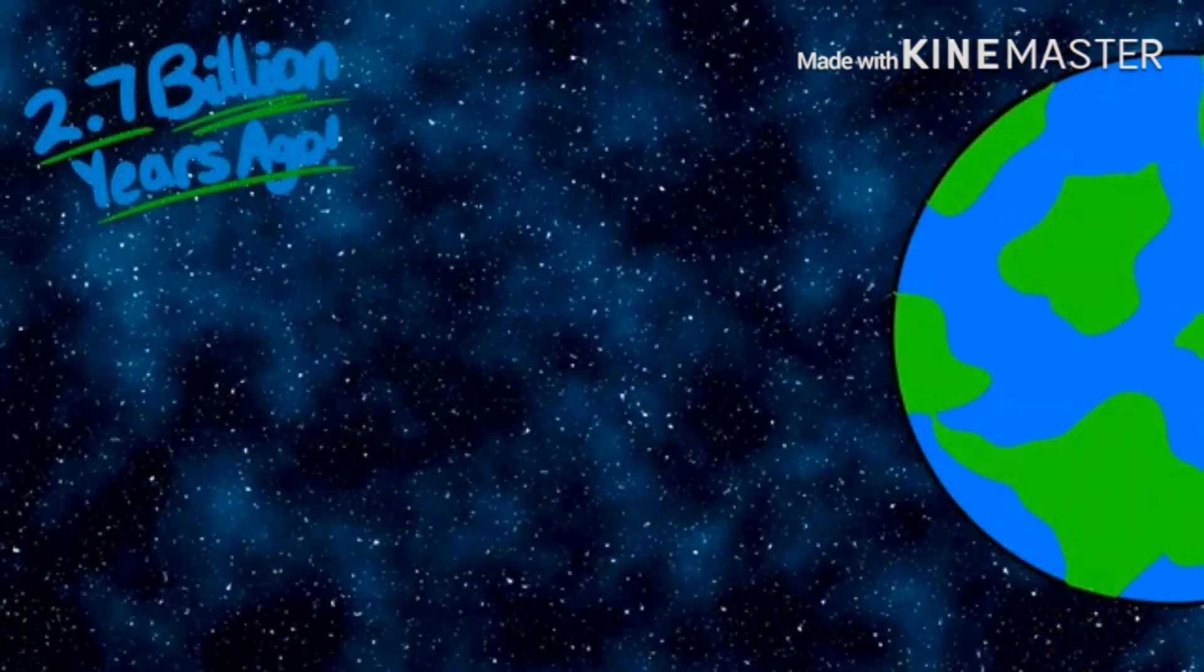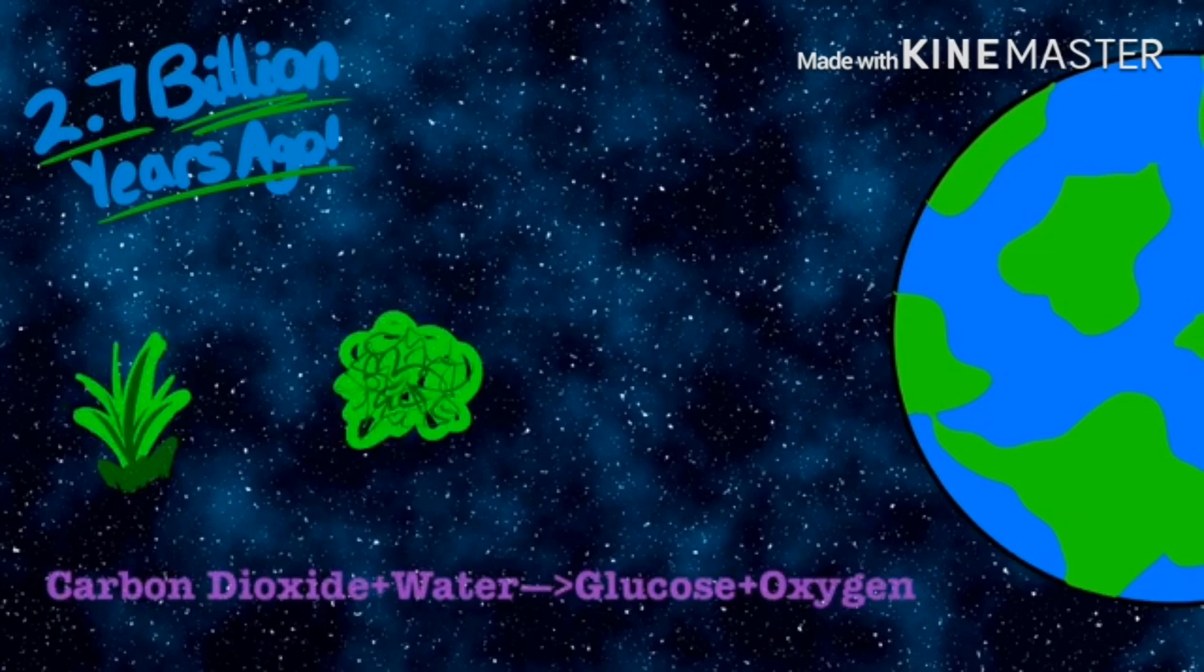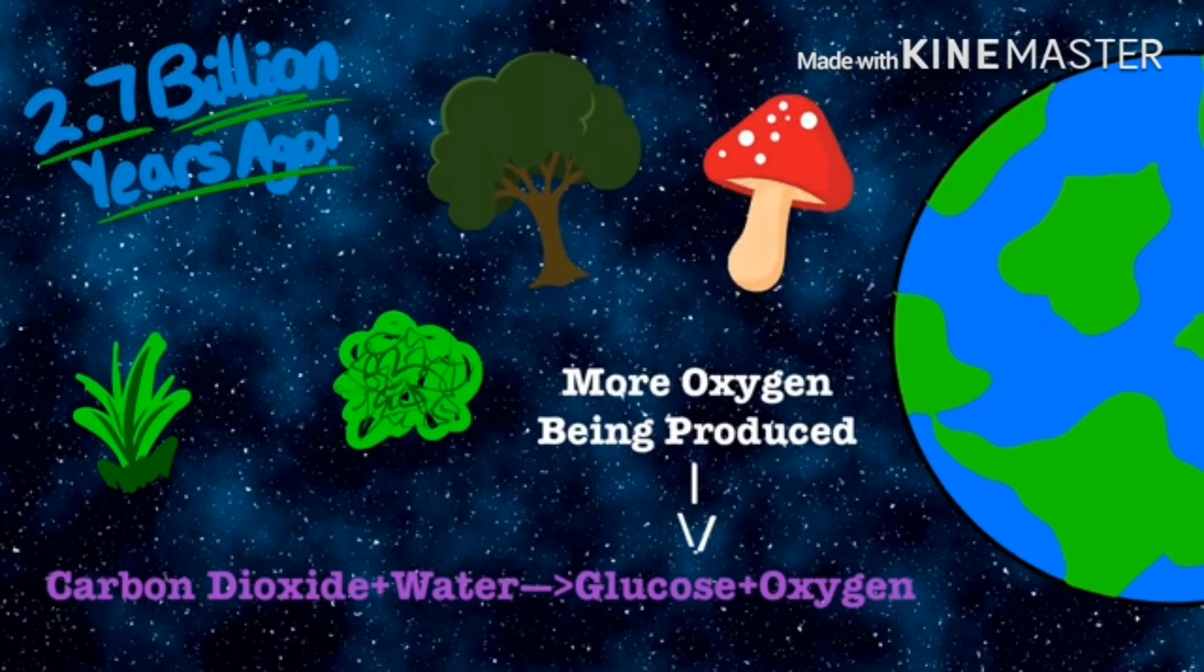Over the next few billion years, because of photosynthesis, green plants started to grow. They were taking in lots of carbon dioxide to produce oxygen. Newer and bigger plants could now start to grow.